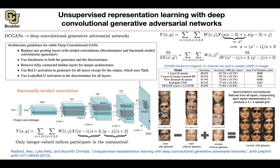I know we have the classifier in GANs that's supposed to detect if it's real or fake — where does that come into play? That's for training. The classifier is just for helping you train the parameters of your generator. The discriminator is just there to discriminate between real and fake — that's the job of the discriminator. So the discriminator is just there to train the generator. Yes. So once the training is done, it's game over — you generate samples in Z, push them through your deconvolution, and that gives you images.